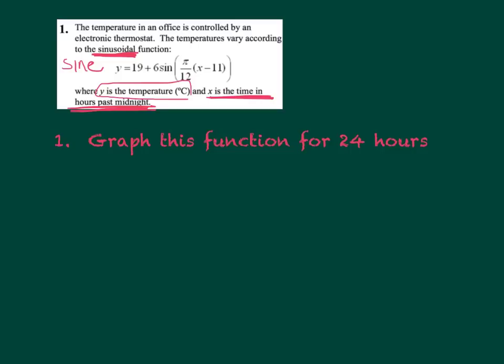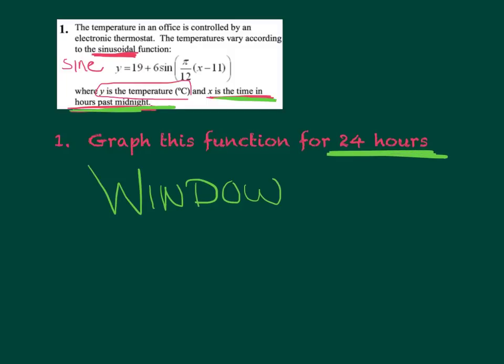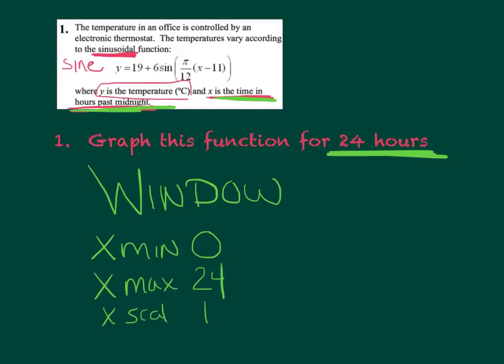Now here's where our thinking comes in. You can't just hit graph — you have to set the window up exactly how you want to see it. Hit the window button. Our X values: X represents the time in hours past midnight and they want to see this for 24 hours. We're going to start our X min at zero, and our X max is going to be 24. Your X scale we're going to count by ones.